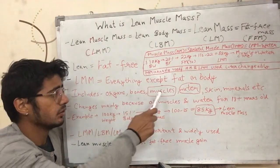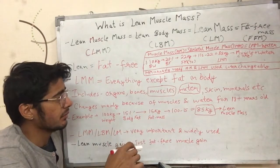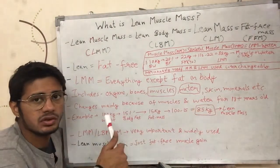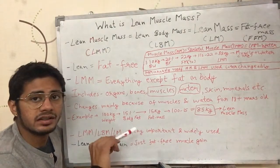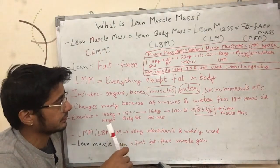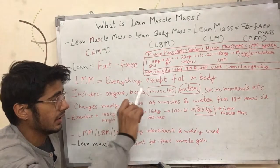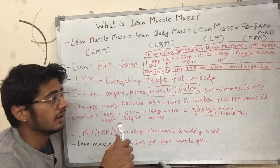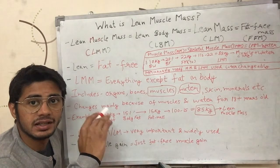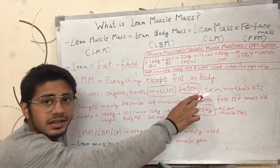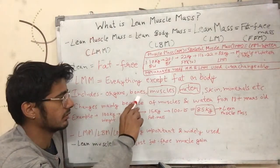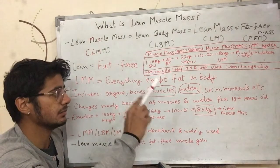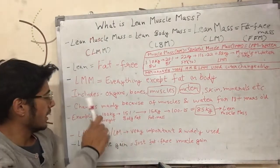Lean muscle mass changes mainly because of changes in muscle weight or water weight, because the weight of your organs, bones, minerals, or skin does not change significantly. This is the case when you are 18 or 20 years old. If you are younger and still gaining height, then bones and skin are also changing, but if you are no longer gaining height, most changes in lean muscle mass come from muscle and water.